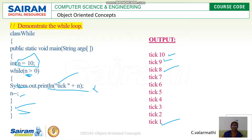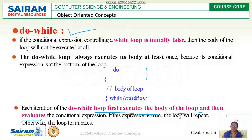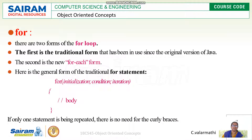The do-while loop: in a do-while loop, the body of the loop is executed first, and then the condition is evaluated — unlike the while loop where the condition is checked first.